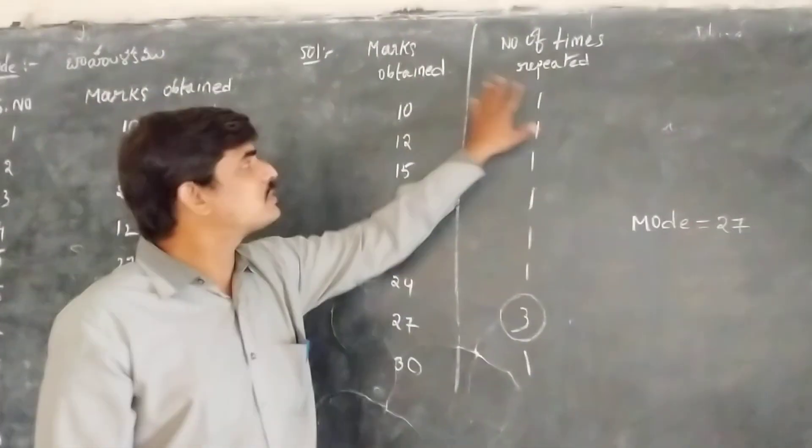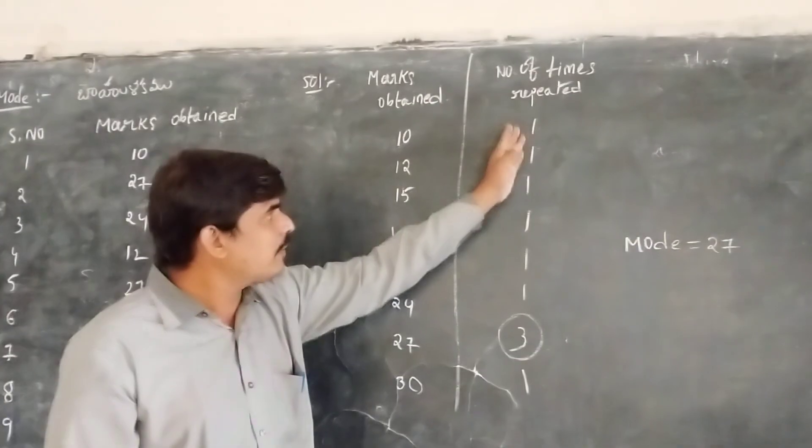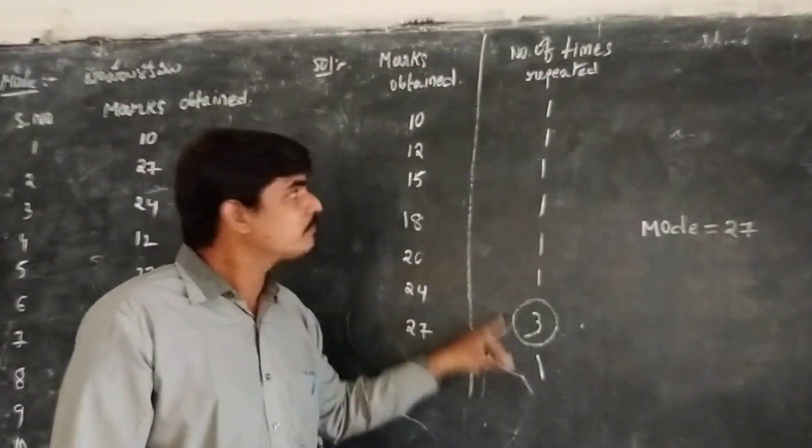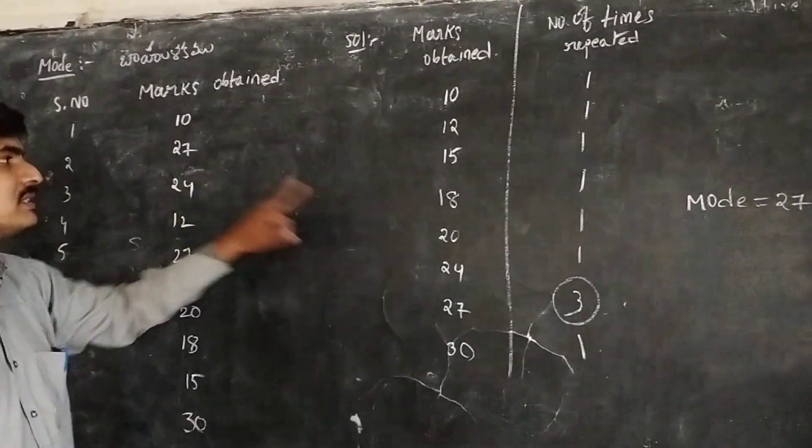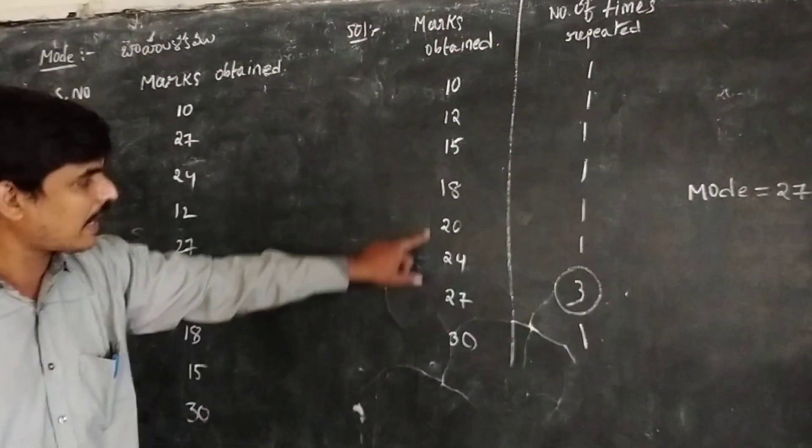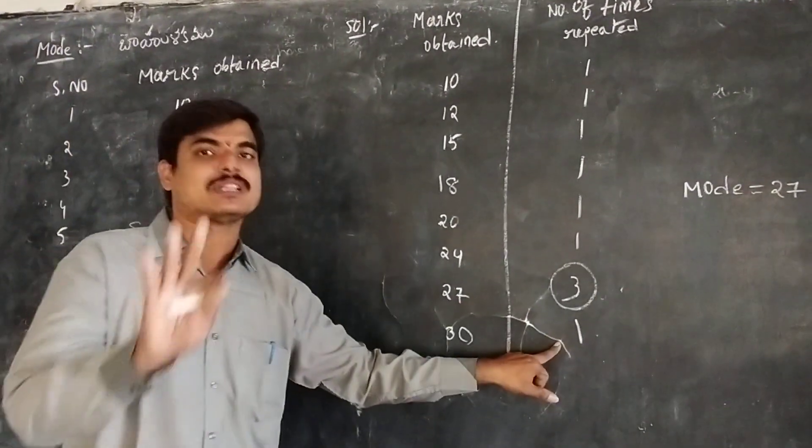And the number of times it repeats - a count of this one. 10 is repeating for only one time, 12 for one time, 15 only one time, 18 one time, like that. 27 repeats for 3 times.